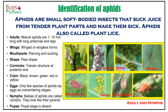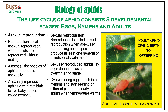Newly born aphids are called nymphs and they look like their parents. The life cycle of aphids consists of two types of reproductions: asexual reproduction and sexual reproduction. It also consists of three developmental stages like eggs, nymphs, and adults.